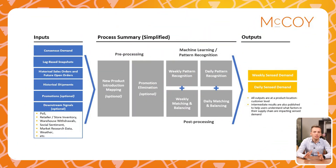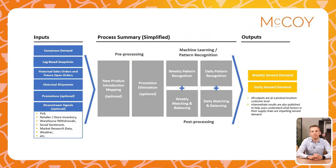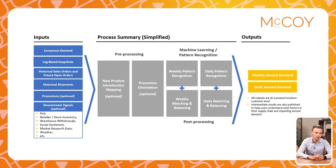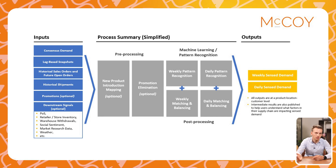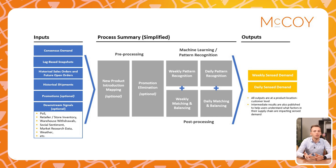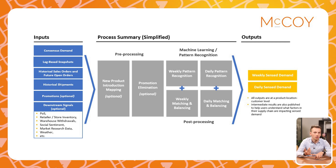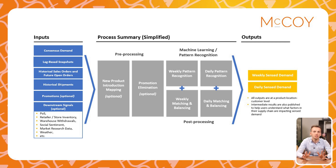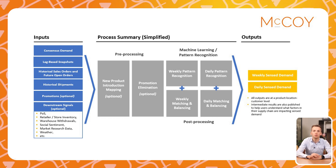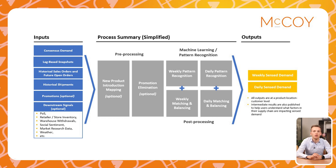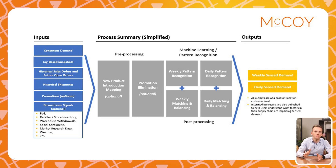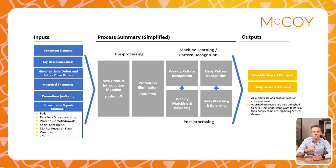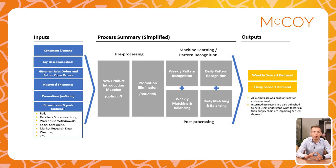Demand sensing is a process that goes beyond traditional planning, focusing on real-time analysis of customer demand signals to predict short-term changes in demand patterns. By integrating data from a variety of sources — including point-of-sales data, social media, weather forecasts, and market trends — demand sensing enables businesses to detect shifts in customer behavior and respond swiftly to emerging demand signals. By combining advanced analytics, machine learning algorithms, pattern recognition, and real-time data integration, IBP can detect subtle shifts in demand patterns, identify emerging trends, and generate accurate short-term forecasts with unparalleled precision.